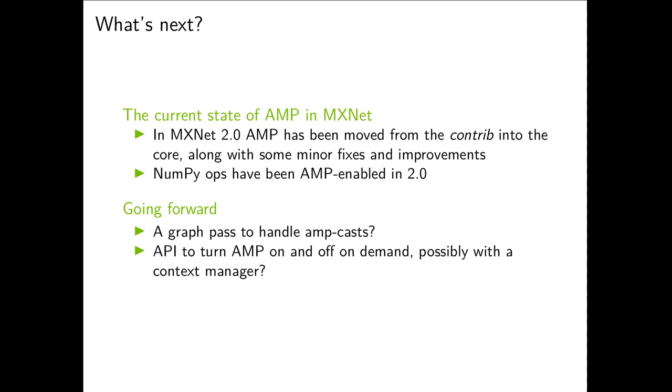One of them: it has been suggested to implement AMP casts with a graph pass. It's arguably a cleaner design, on the other hand it may introduce numerical inconsistencies between hybridized and imperative mode of execution. That's why it's still up for discussion. Another wish was to add ability to turn AMP on and off on demand, possibly with a Python context manager. This is also something we will look into.